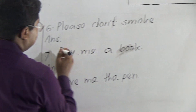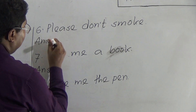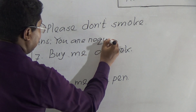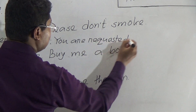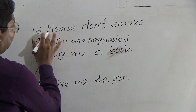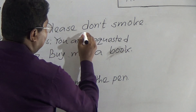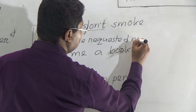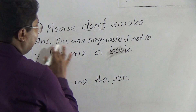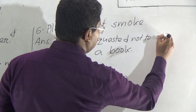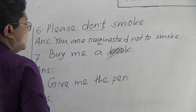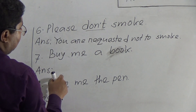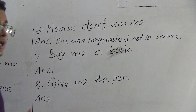Example six: 'Please don't smoke.' In case of 'please,' we write 'You are requested.' But as 'don't' is also given, we write 'You were requested not to.' Then add the verb: 'smoke.' Result: 'You were requested not to smoke.' So, if the sentence starts with 'please,' write 'You were requested to.' If it starts with 'please don't,' write 'You were requested not to.'